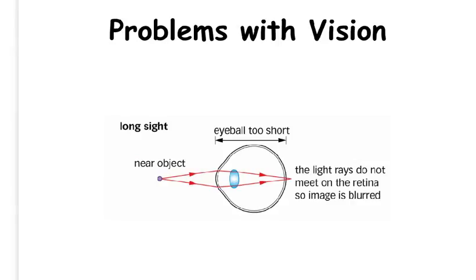The third problem you need to know about is long-sightedness. Long-sightedness is caused when the eyeball is too short or when the lens cannot accommodate properly for close-up objects. This means that the light rays that enter the eye do not meet on the retina and therefore the image is blurred.